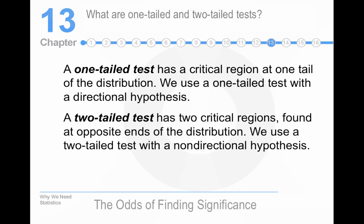So, what are one-tailed and two-tailed tests? A one-tailed test has a critical region at one tail. Well, so that's a unidirectional hypothesis. A two-tailed has two critical regions. That's a bidirectional hypothesis.